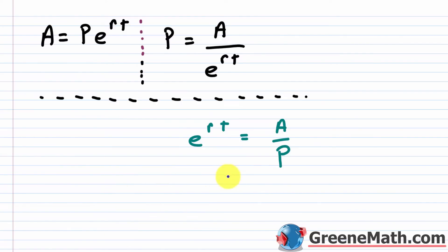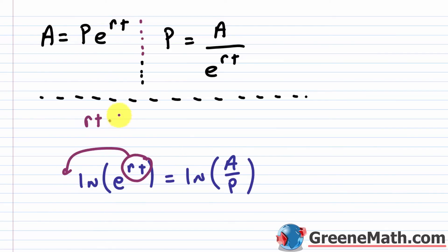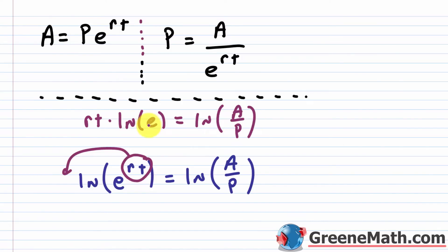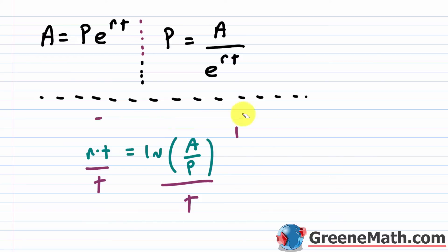Taking the natural log of both sides gives us: ln of e^(rt) equals ln of A over P. Using the power rule, rt comes out in front: rt times ln(e) equals ln(A/P). Since ln(e) equals one, this simplifies to rt equals ln(A/P). To solve for r, divide both sides by t, giving r equals ln(A/P) divided by t.